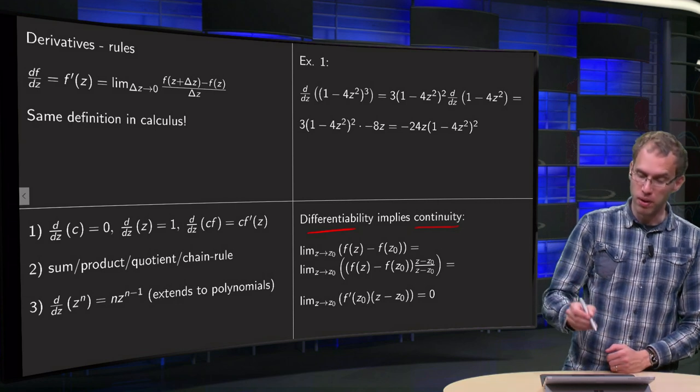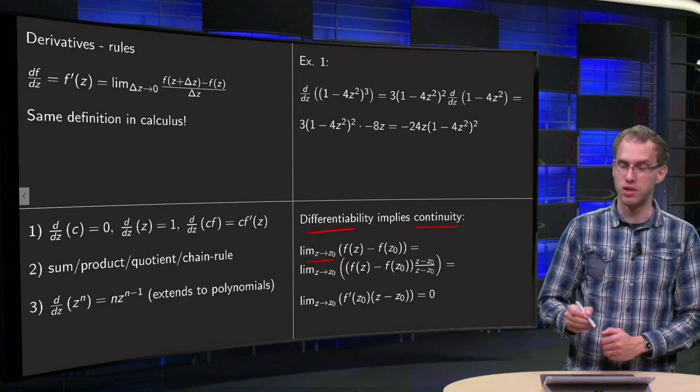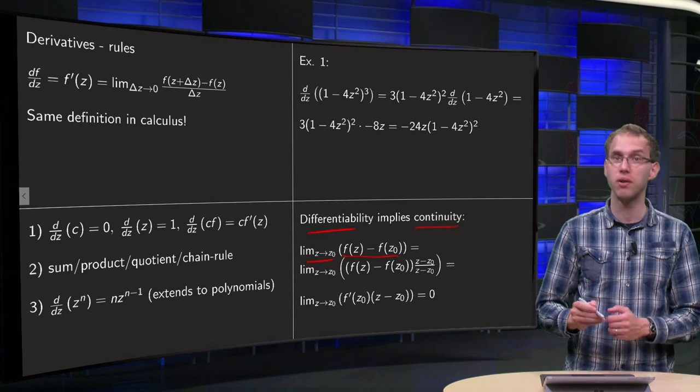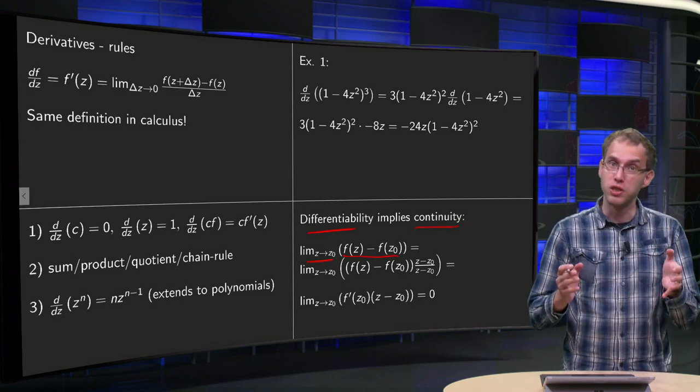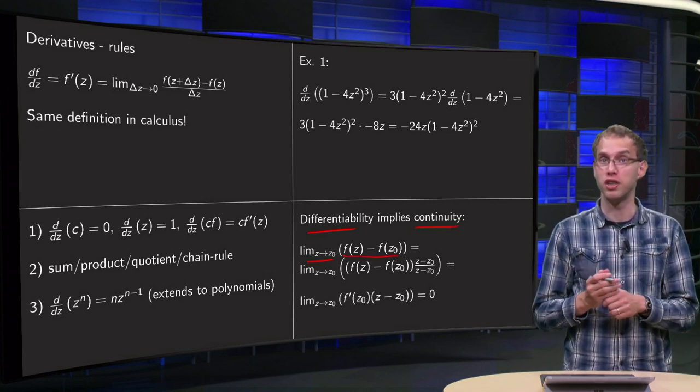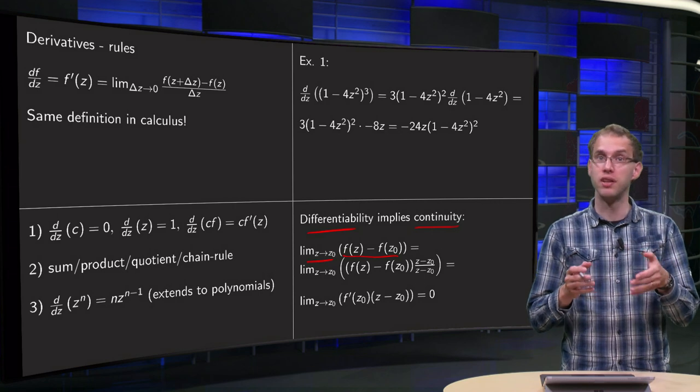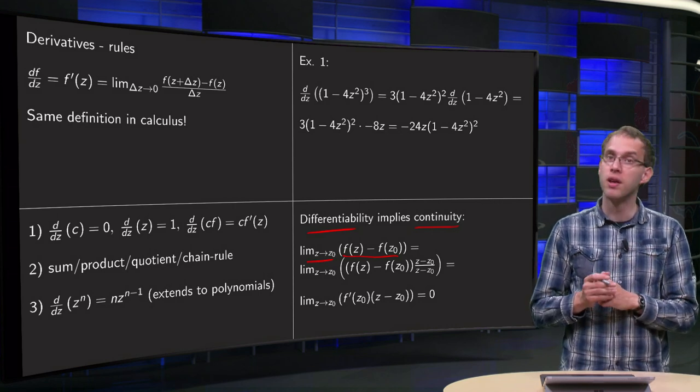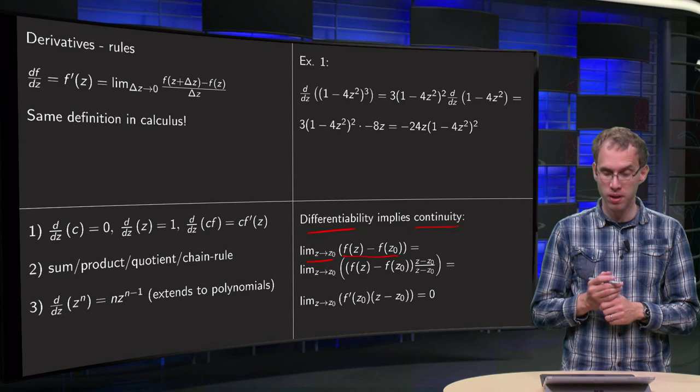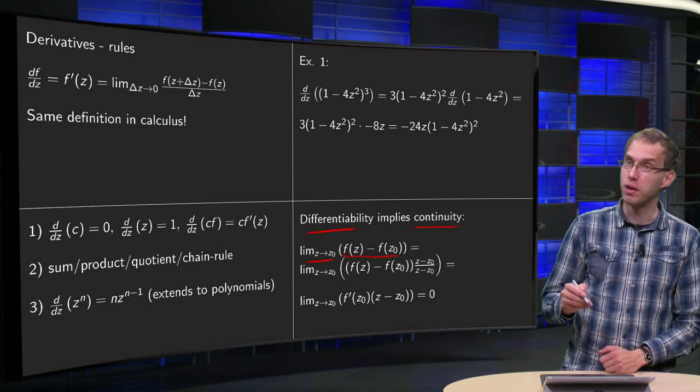And why is that? Well, if you take the limit as z→z₀ of f(z)-f(z₀), the function is continuous and this limit equals 0 because the limit exists and equals f(z₀), so the difference will be 0. However, we can write this as follows. We can multiply by 1: lim(z→z₀) [f(z)-f(z₀)]·[1/(z-z₀)]·(z-z₀).